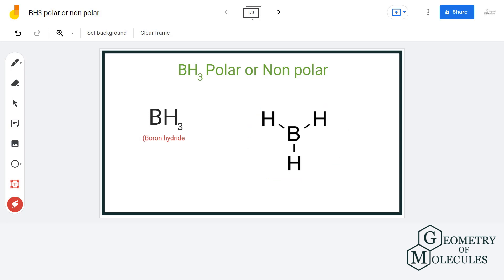This is what the Lewis structure of BH3 looks like. You can clearly see that the central atom boron has formed three sigma bonds with three hydrogen atoms and has no lone pairs of electrons on it.